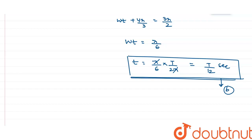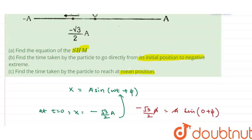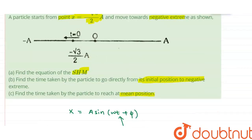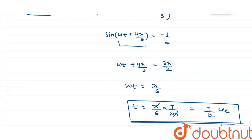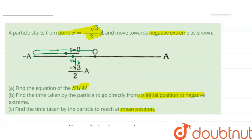In part C, they are asking for the time taken by the particle to reach the mean position. The particle starts moving from the initial point, goes to the negative extreme, then returns back and reaches the mean position O. At t equals zero, the phase angle is 4π/3. At the negative extreme (x equals minus a), the phase angle is 3π/2, as calculated earlier.